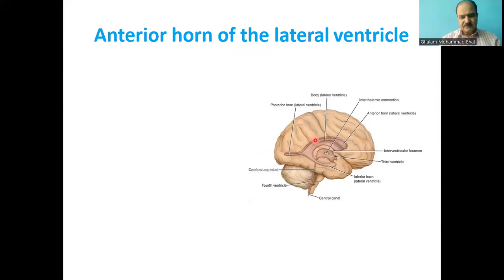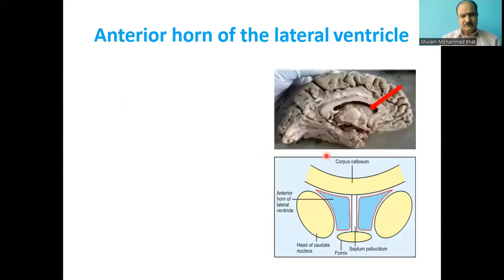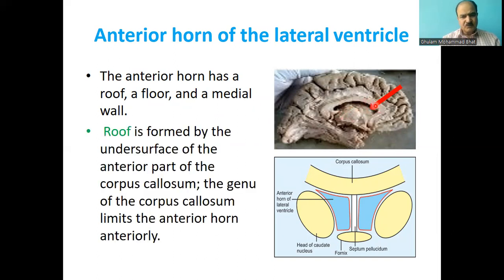The anterior horn of the lateral ventricle extends forwards into the frontal lobe. It continues posteriorly with the body at the interventricular foramen. The anterior horn has a roof, a floor, and a medial wall. The roof is formed by the anterior surface of the corpus callosum, and the genu of the corpus callosum limits the anterior horn anteriorly.